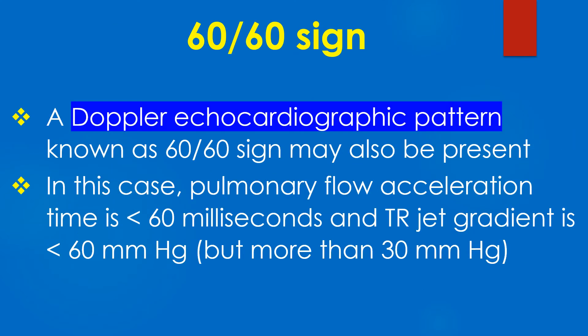A Doppler echocardiographic pattern known as the 60/60 sign may also be present in pulmonary embolism. In this case, pulmonary flow acceleration time is less than 60 ms and the tricuspid regurgitation jet gradient is less than 60 mmHg but more than 30 mmHg.